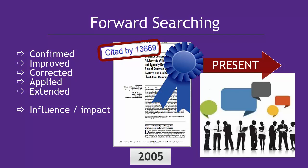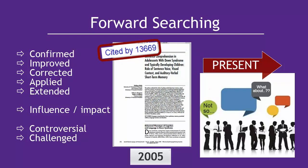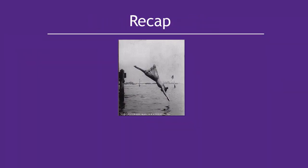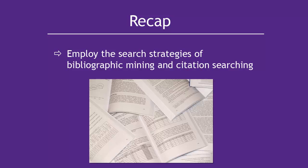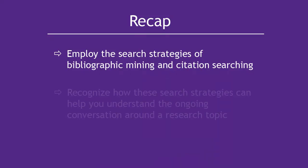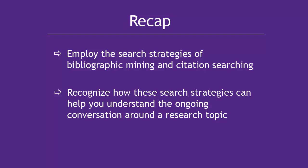A particular idea or article might be highly controversial, or one article might cite another article to refute an author's findings or methods. Without reviewing the articles citing the original source, you may not see that the methodology or conclusions are being challenged. Just because an article hasn't been cited doesn't mean it won't be notable — it might simply be too new to have been cited. As you dive deeper into your literature review, consider employing bibliographic mining and citation searching to help you understand the ongoing conversation around a research topic.